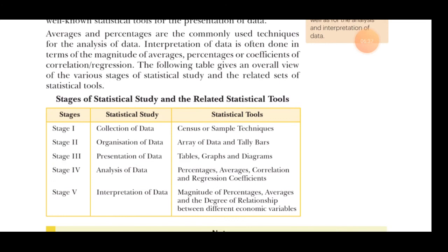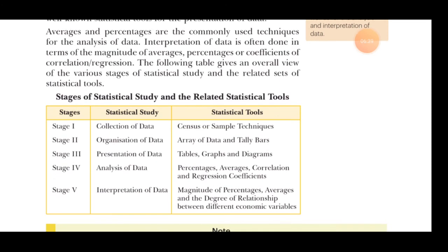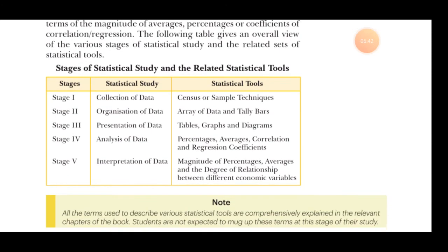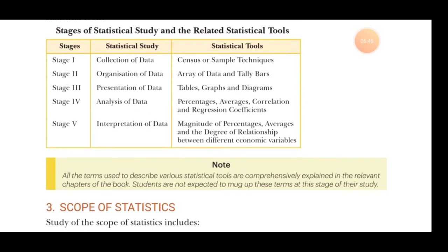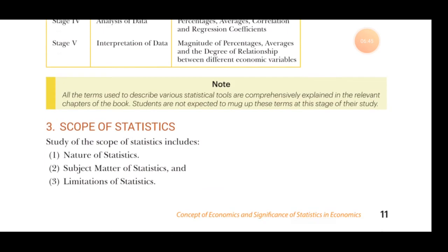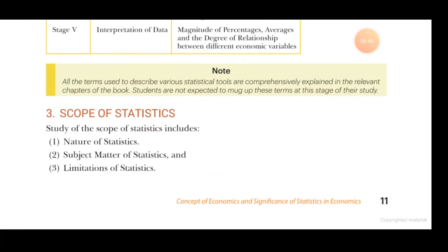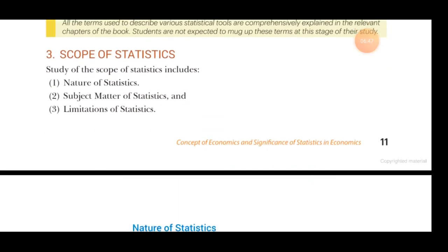The stages of statistical tools are: Stage 1 — collection of data; Stage 2 — organization of data; Stage 3 — presentation of data; Stage 4 — analysis of data; and Stage 5 — interpretation of data. These five stages also represent the scope of statistics.